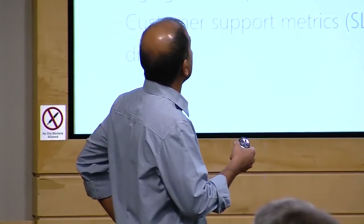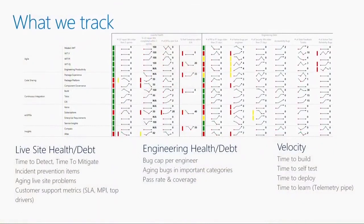This is what our team scorecard looks like. The types of things we track are live-site health and debt, engineering health and debt, and velocity — things like bug cap per engineer. For live-site, we track time to detect, time to mitigate, and how many repair items a team is carrying. A repair item is when you have a live-site incident, do a retrospective, and identify work to prevent it from recurring. We track that teams are closing those repair items within a reasonable amount of time. The scorecard shows only team names — no individual names — and something shows up red if you're outside the allowed threshold for that metric.